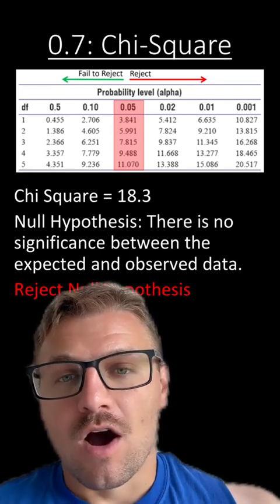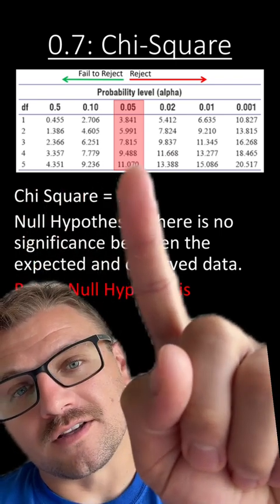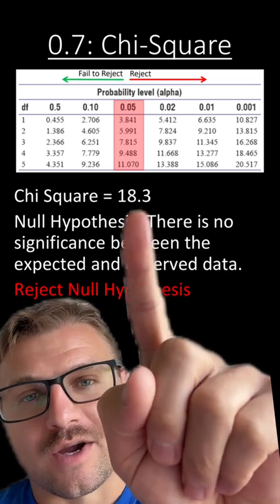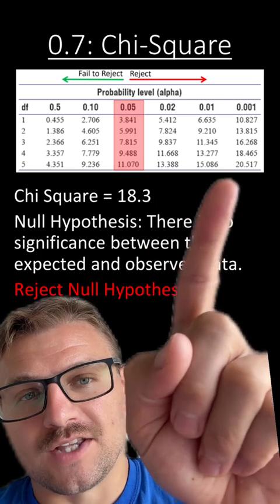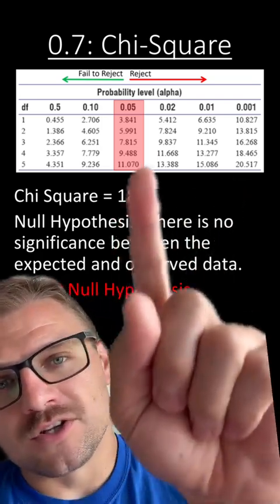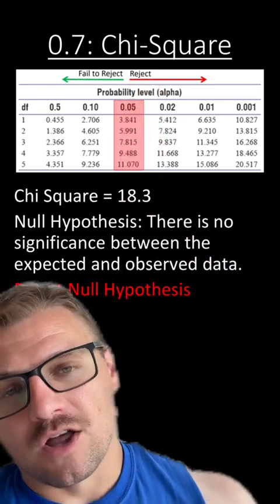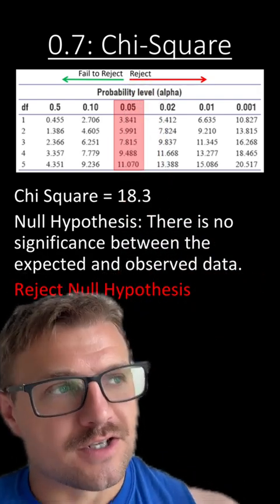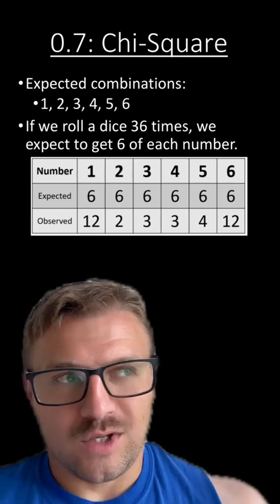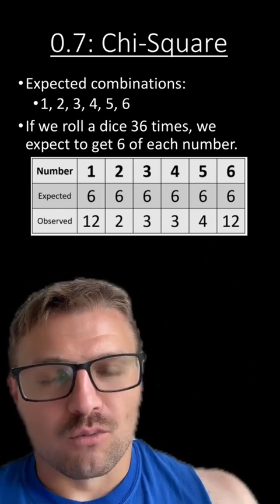Since there are six total outcomes, 1, 2, 3, 4, 5, 6, our degrees of freedom is 5. 6 minus 1 is 5. So we're on this line here, which means our critical value is 11.070. Our chi-square is 18.3, which means it's over between these two numbers. And that means our p-value is going to be smaller than 0.05, which means we reject the null hypothesis. That means something is going on here. Some variable is influencing the experiment. And we don't expect normally to get these values for rolling a dice.